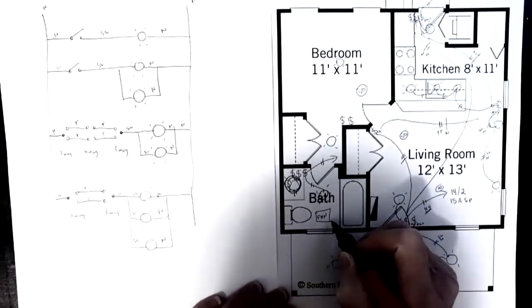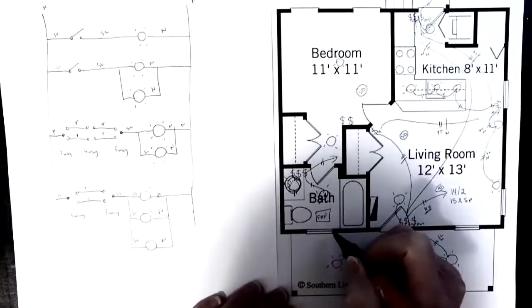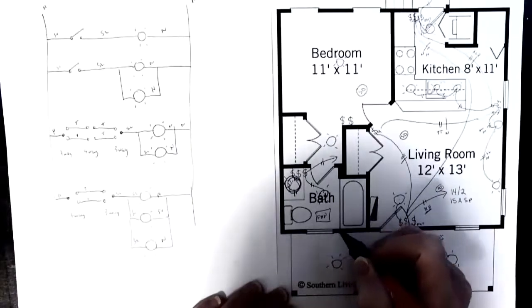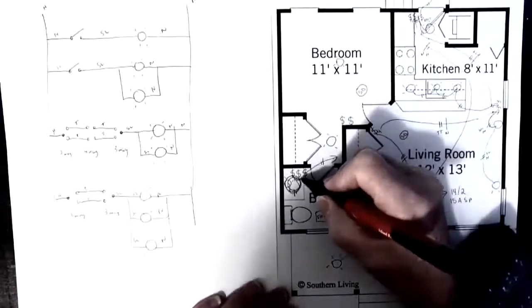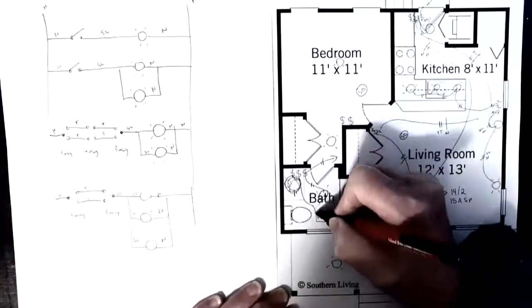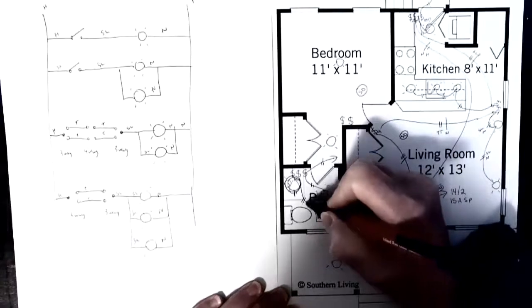And this bathroom fan is a little bit different in that today's fans have two settings. One that runs all the time, and one that comes on when the switch comes on. So it runs all the time on a really low setting and moves the air continuously in and out of your house. And then when you're using the bathroom, say you're having a shower, you want to boost that up and have that fan running more vigorously to get the moisture out of your bathroom.